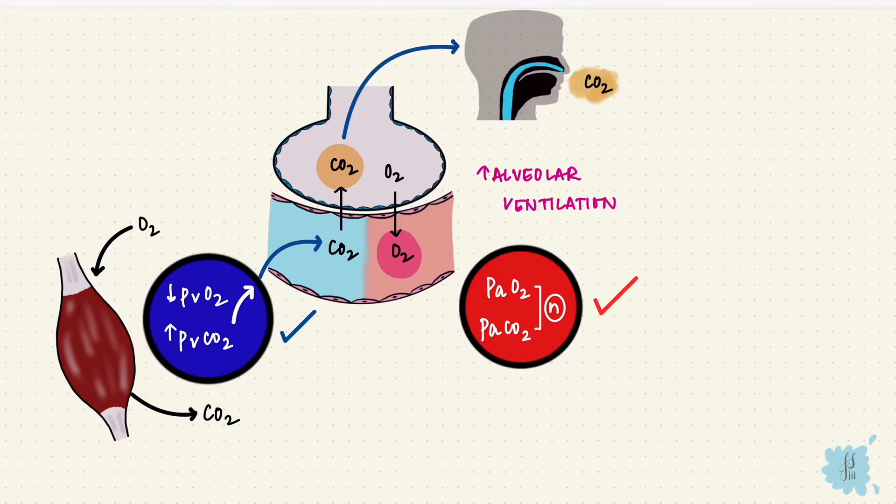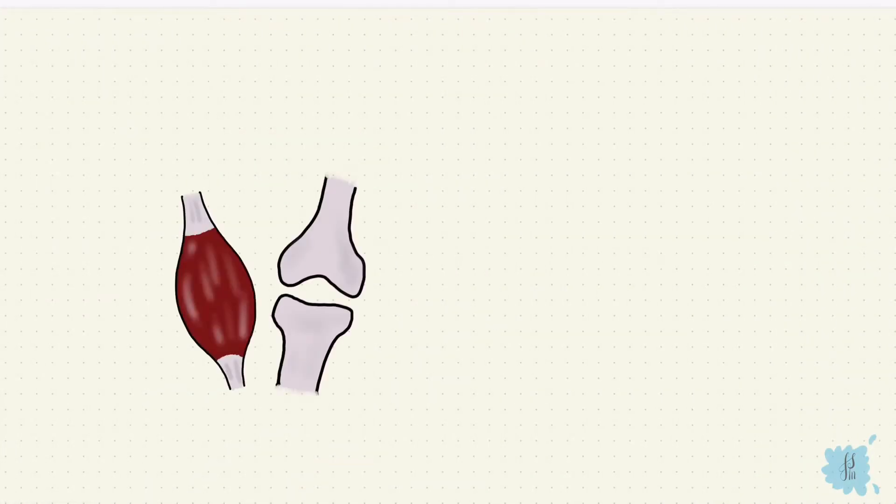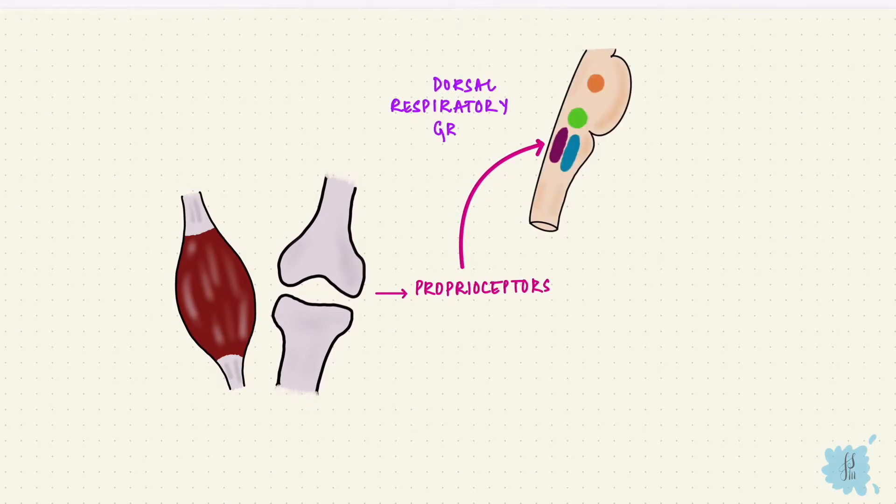One stimulus for increased ventilation comes from the muscle and joint proprioceptors. They stimulate the dorsal respiratory group of neurons in the medulla. This group controls inspiration, so stimulation of it would increase inspiration.